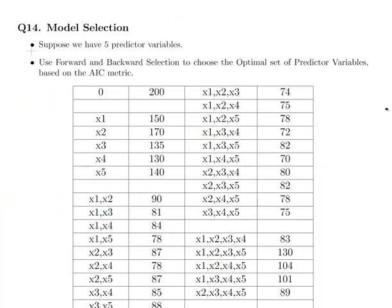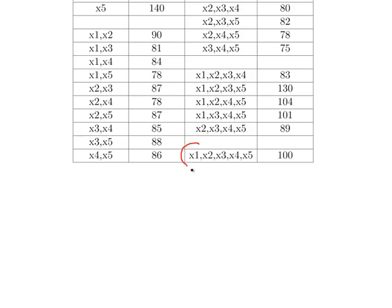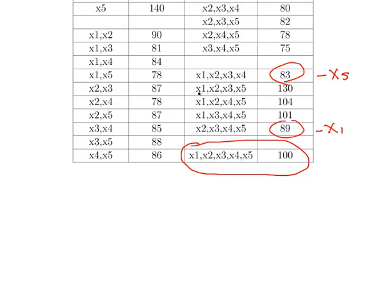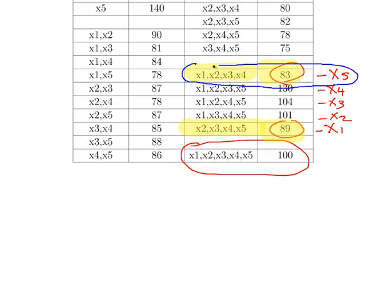Now I'm going to do backward selection, and I'll be a little quicker. With backward selection we start at the end — the full model — and see if we can improve it by removing variables. If we take out X5, the AIC comes down to 83. If we take out X1, it comes down to 89. Taking out anything else — X4, X3, or X2 — the AIC goes up. So the best option is to take out X5, giving AIC 83.